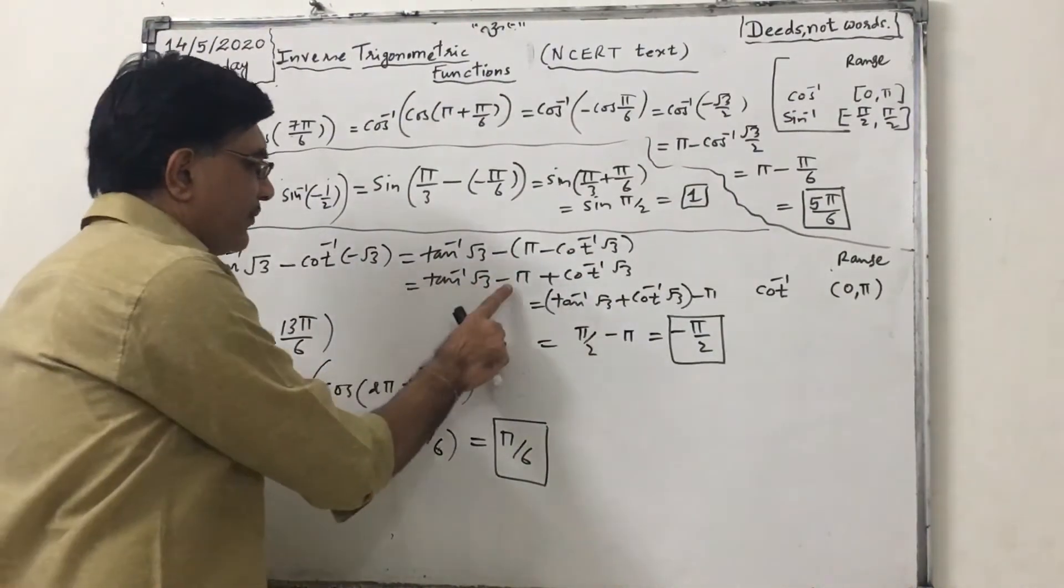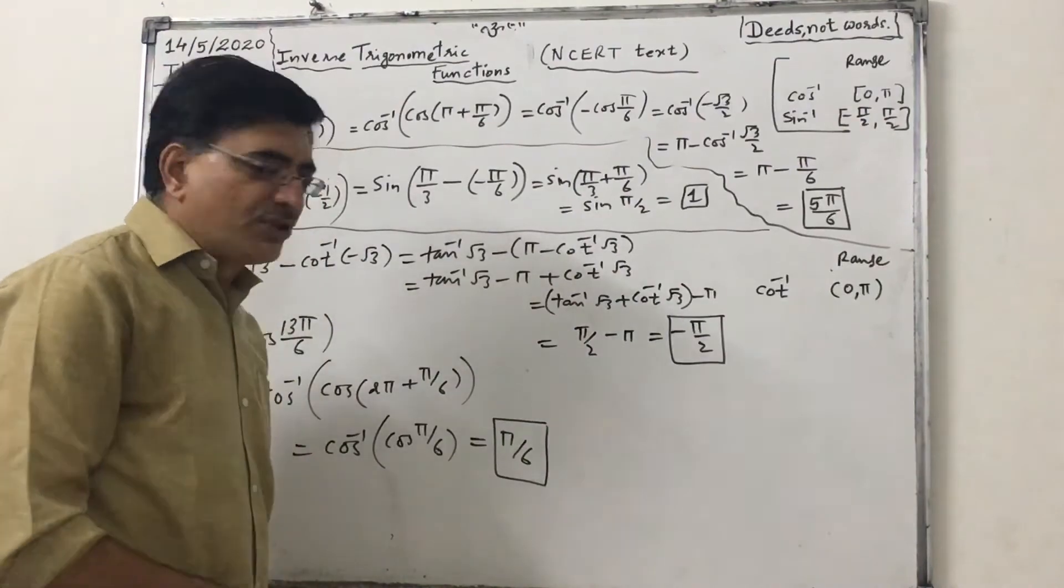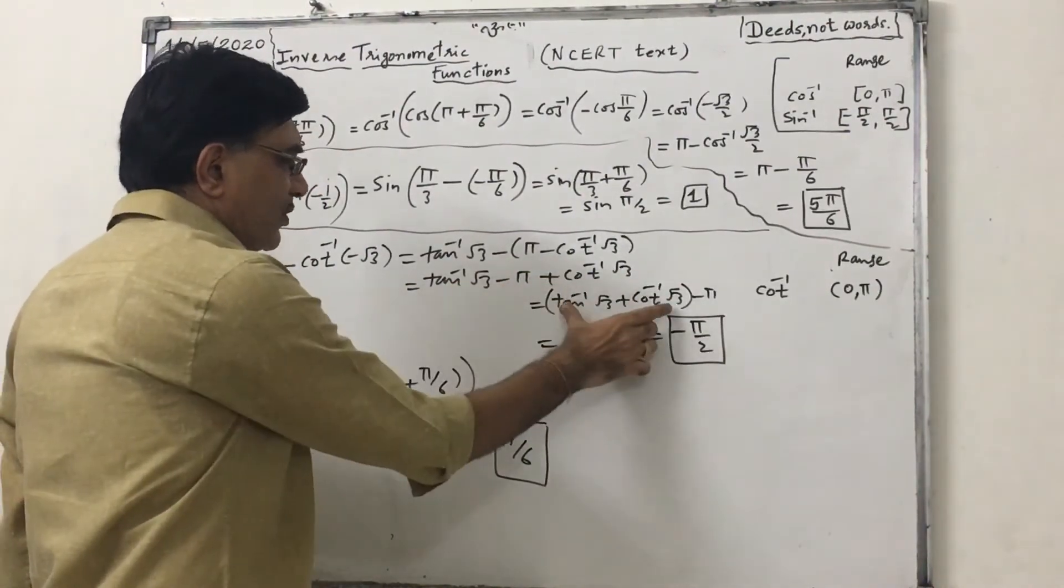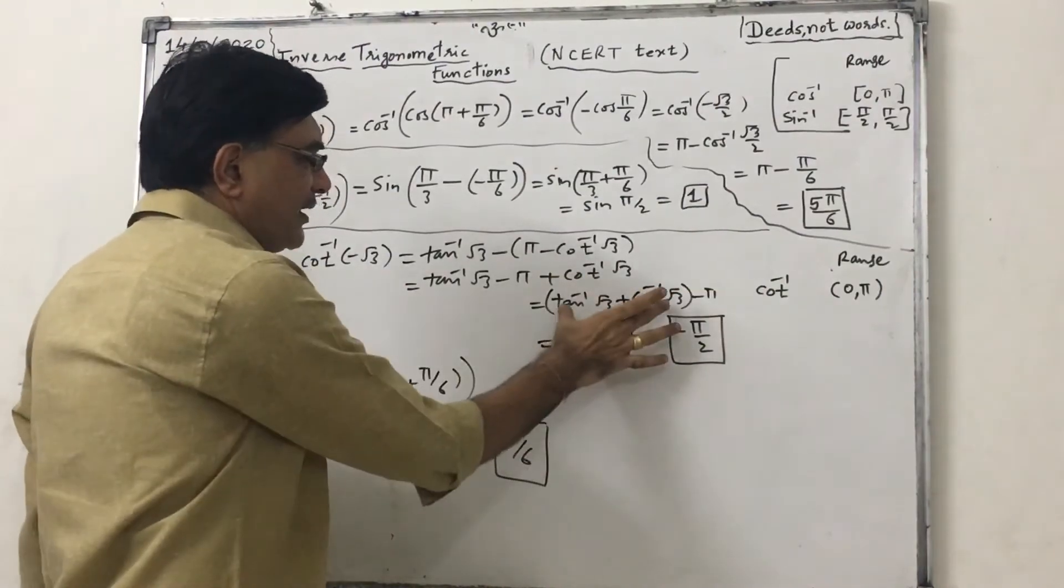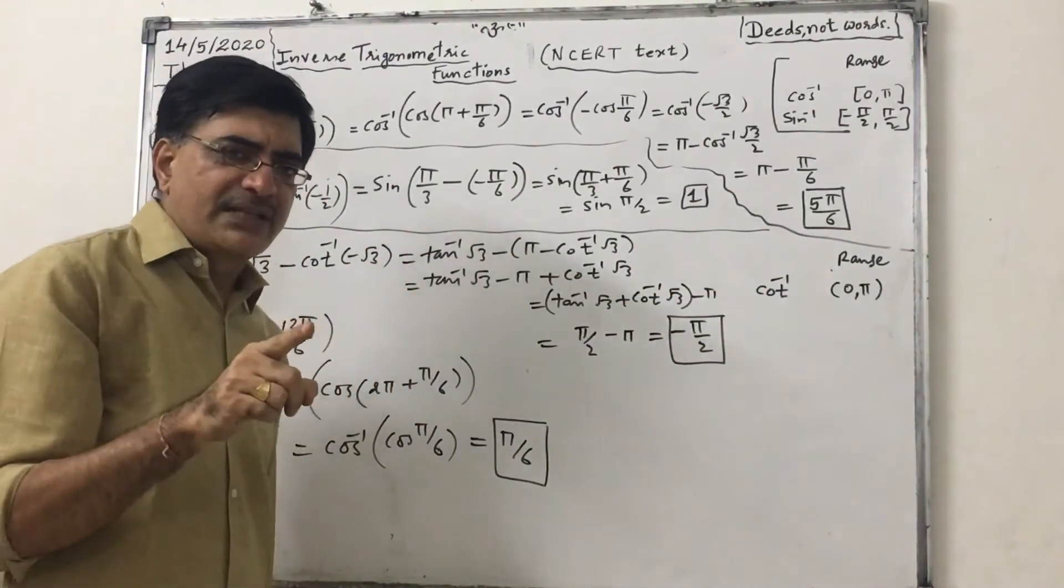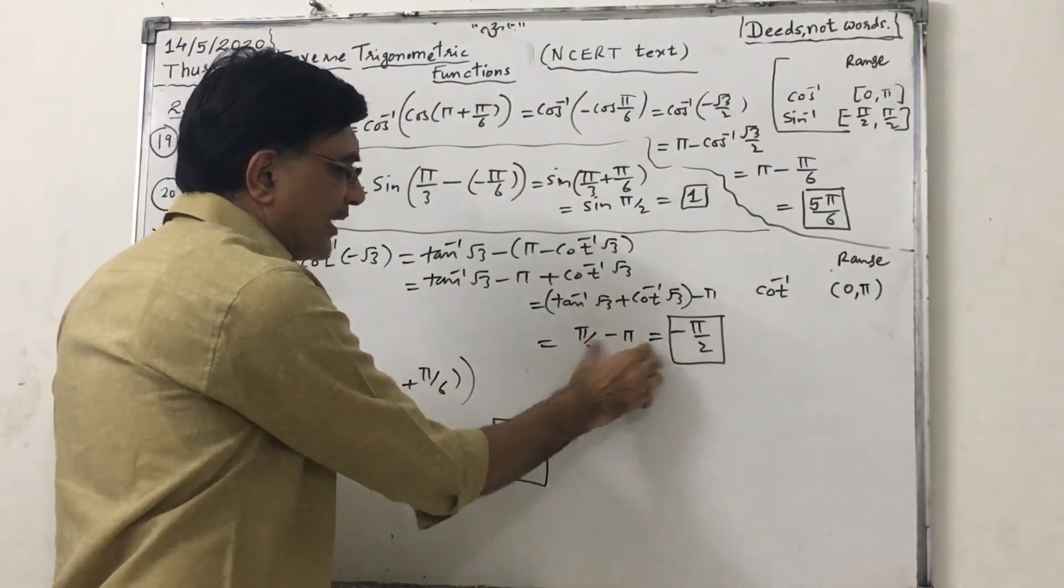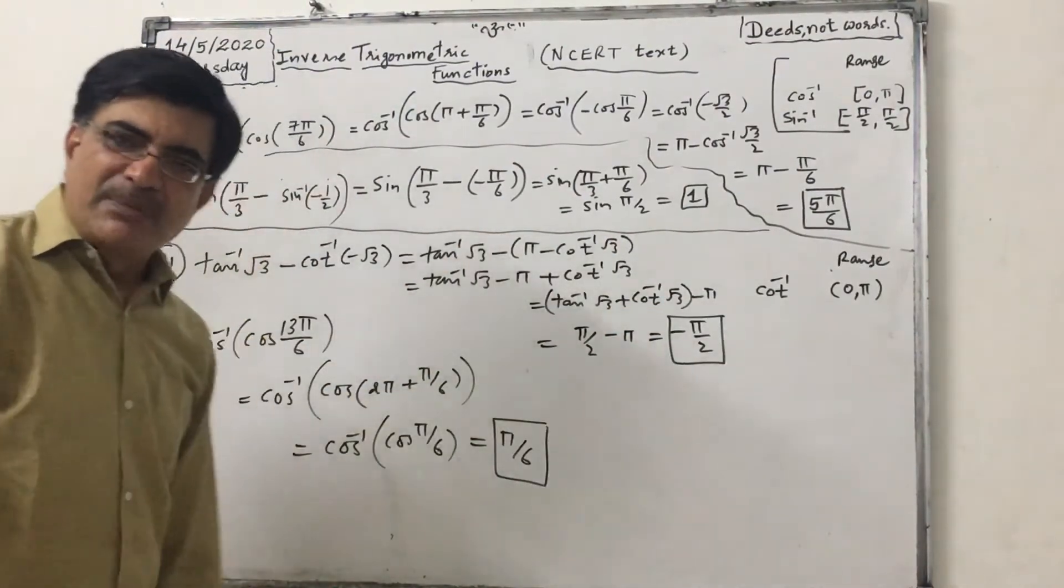So it can be written as π minus cot inverse of minus root 3. So tan inverse of root 3 minus π, minus minus plus cot inverse of root 3. Taking these two in same bracket: tan inverse root 3 plus cot inverse root 3 minus π. But we know that tan inverse x plus cot inverse x equals π by 2. So this can be written as π by 2. So π by 2 minus π, answer is minus π by 2.